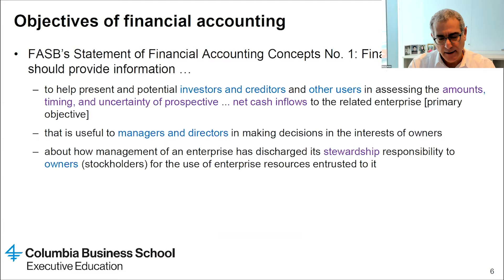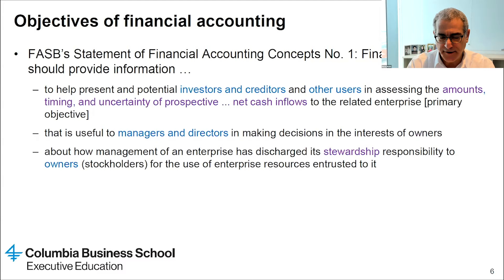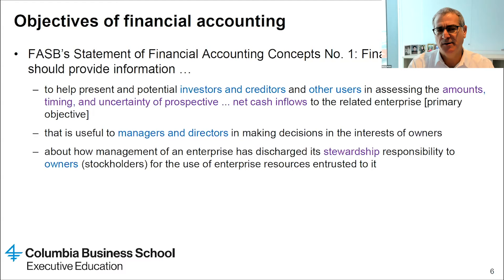The primary objective of financial accounting, as stated by the FASB — which is the body that sets accounting principles in the U.S. — is to help investors and creditors. We recognize there are other users too, but we emphasize investors and creditors. Help them assess the amount, timing, and uncertainty of cash flows to the enterprise. Additional objectives include providing information to help managers make decisions and help owners evaluate management, but these are not considered the primary objective.